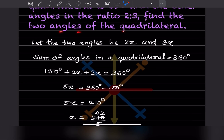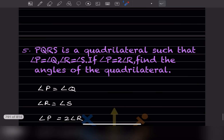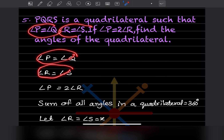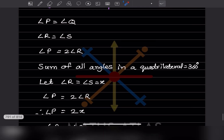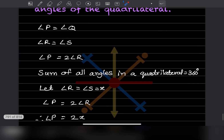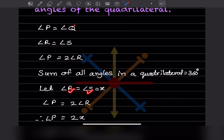Next problem: PQRS is a quadrilateral where angle P = angle Q, angle R = angle S, and angle P = twice angle R. Find all angles. The sum of all angles is 360. Let angle R = angle S = x. Since angle P = twice angle R, angle P = 2x.